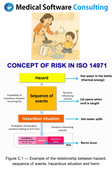We consider two probabilities: P1, the probability that the sequence of events will occur and lead to a hazardous situation, and P2, the probability that this hazardous situation will actually result in harm. The overall probability of harm is evaluated by considering both P1 and P2.